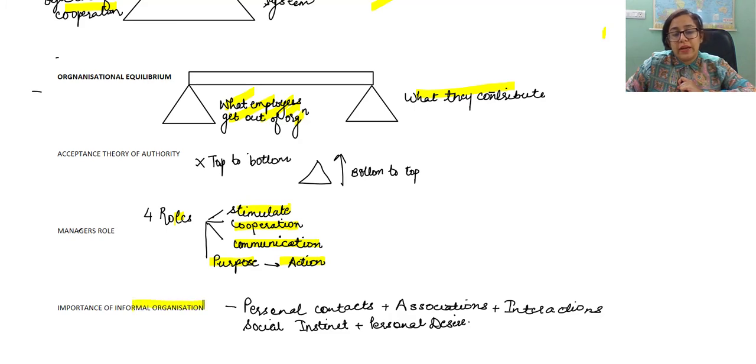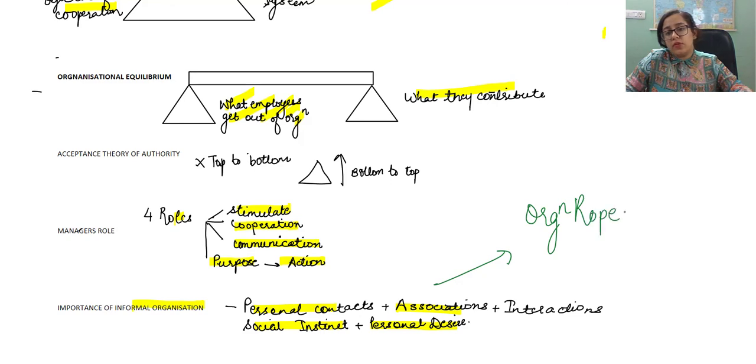He also focuses on the importance of informal organization and says that the organizations do not exist in isolation and personal contacts, associations and interactions should be used by the organization and the managers so as to identify the social instincts and personal desires of employees and use them in the formal organization. This brings in cohesiveness in the organization and the formal organization is energized by the informal organization. He also calls these informal organizations as organizational ropes.